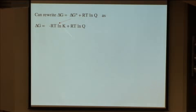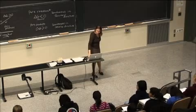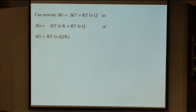And now we can rearrange this equation. If we rearrange it, we have ΔG, the ΔG at any particular point in the reaction equals RT ln(Q/K).